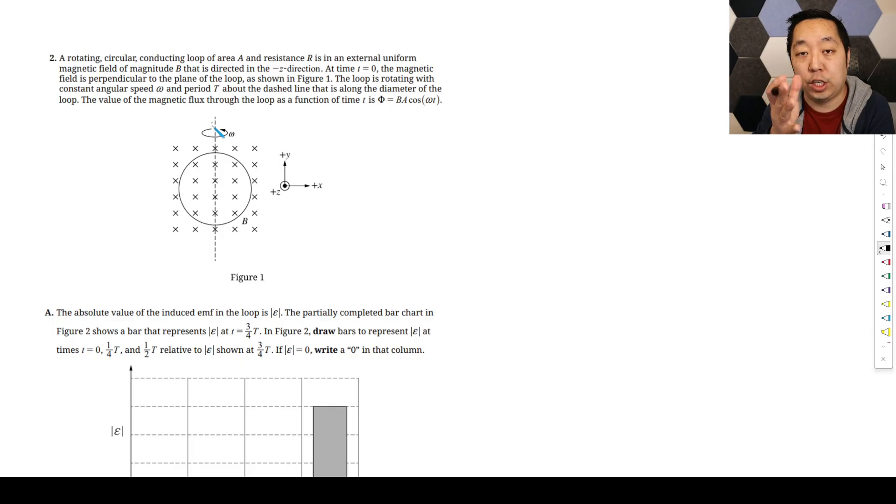The loop is rotating with constant angular speed around the Y axis, so we're going to be changing the amount of flux going through the loop about the dashed line along the diameter. The value of the magnetic flux is given by this expression. The absolute value of the induced EMF is epsilon. The partially completed bar chart represents epsilon at three quarters T where T is the period. Draw bars to represent epsilon at time zero, one quarter T, one half T relative to this.